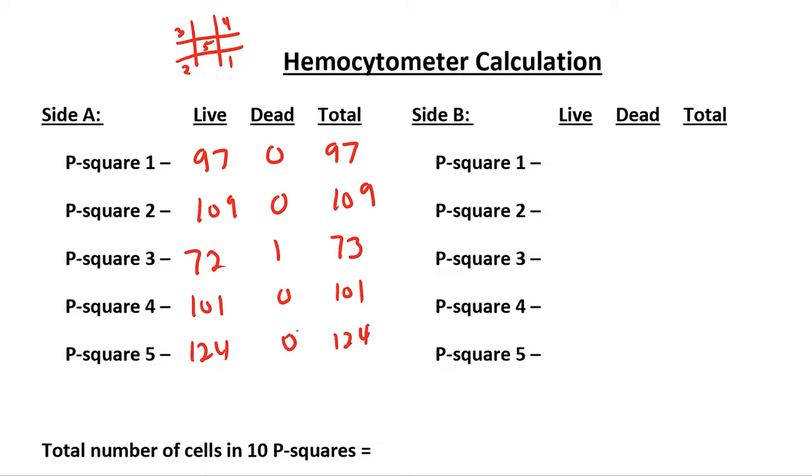This is very common to not have many or any dead cells on the hemocytometer. We moved to the other side, we counted five P-squares, 103 live, one dead, 104, 90 live, zero dead, 90 total, 82 live, one dead, 83 total, 77, 0, 77, and 56 live, one dead, give me a total of 57 cells.